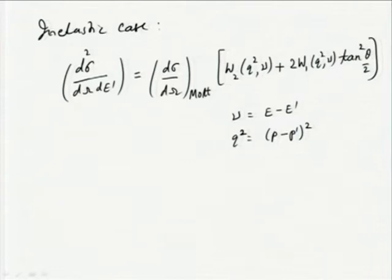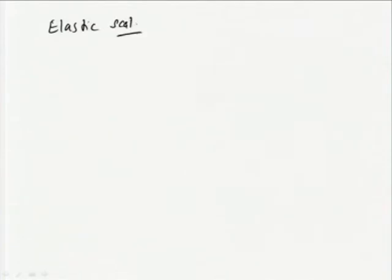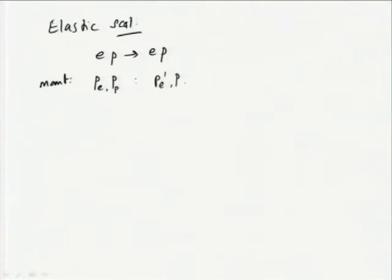The difference compared to the earlier case is that the structure functions are now functions of not only Q², but also ν, which is the difference in energy of the final and initial electron. Let us look at why ν is now an independent variable unlike in the elastic case. In elastic scattering, E+p → E+p, denoting the momenta as p_e for the initial electron, p_p for the proton, p_e' for the final electron, and p_p' for the final proton.